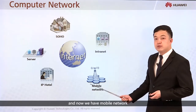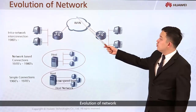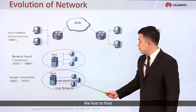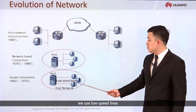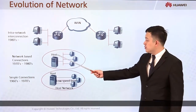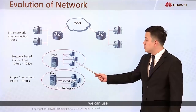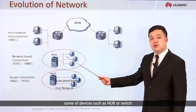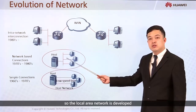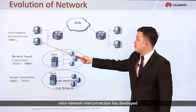We have mobile networks — we can use our cell phones to view websites and talk to each other. In the evolution of networks, in the past, hosts used low-speed lines to communicate and transmit information very slowly. Then our networks developed, and between hosts we can use devices such as hubs or switches to communicate, so the local area network developed.